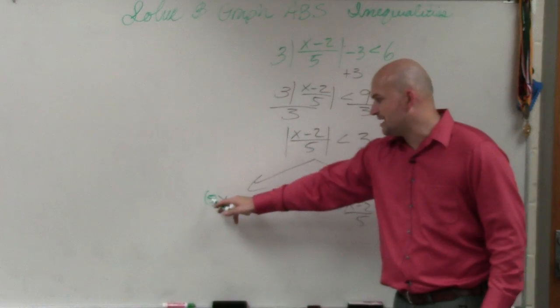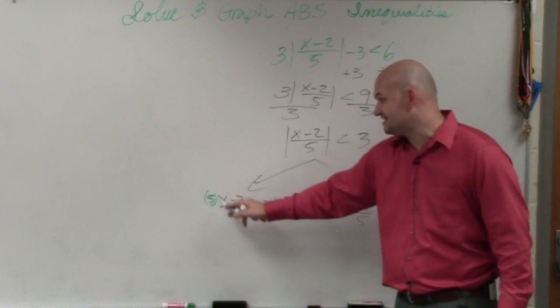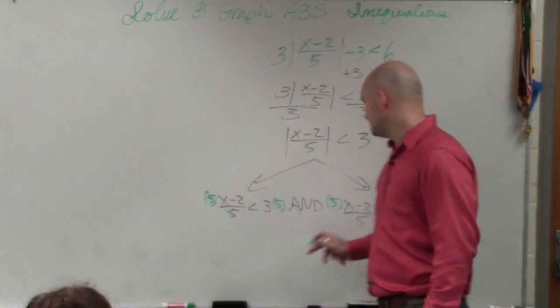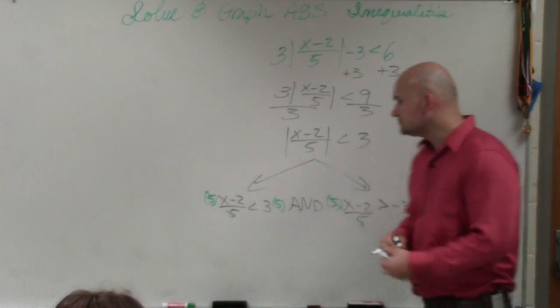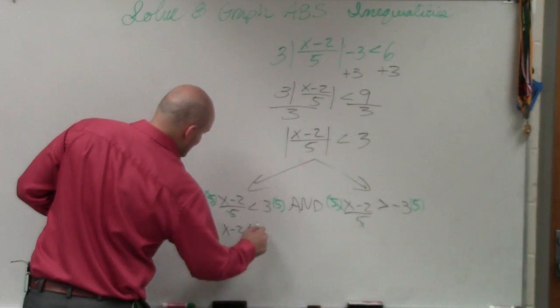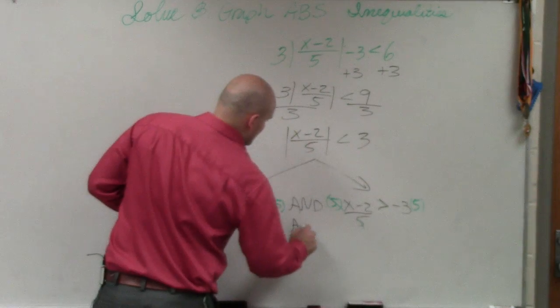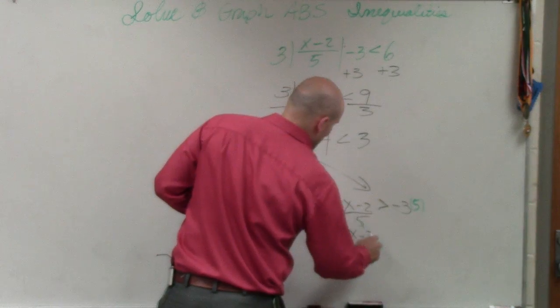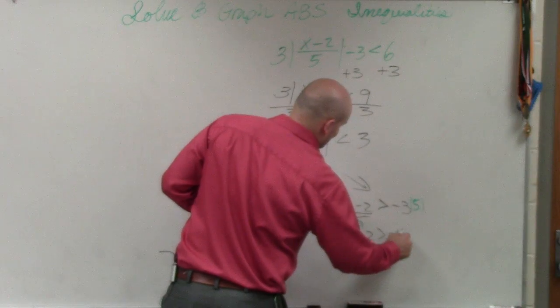Well, since I'm multiplying this whole expression and dividing this whole expression by fives, the fives will divide out. So therefore, I'll be left with x minus 2 is less than 15, and x minus 2 is greater than negative 15.